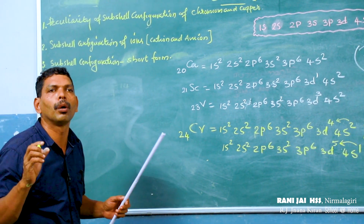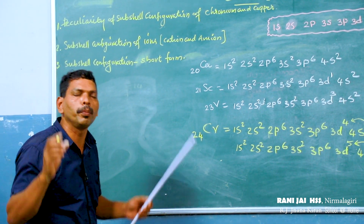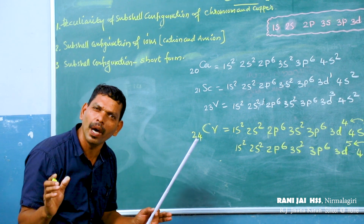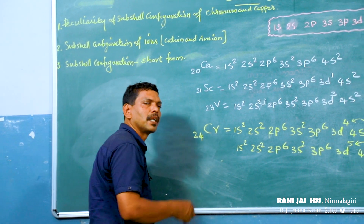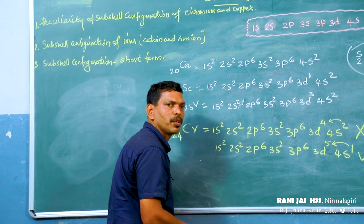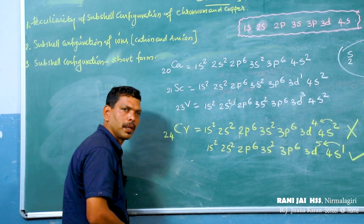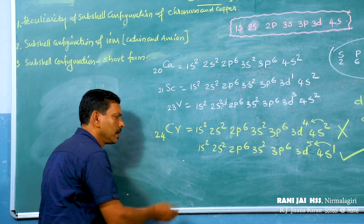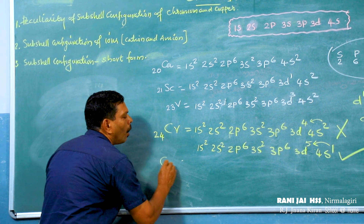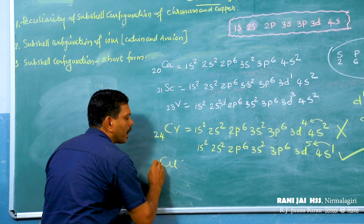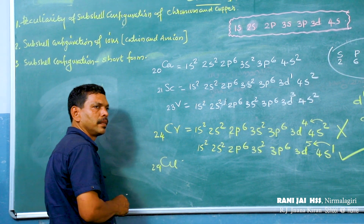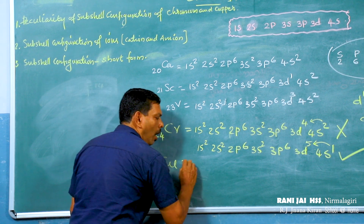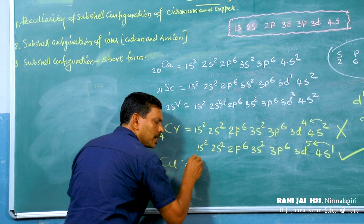Now what about copper? The atomic number of copper is 29. Try to write the electronic configuration of copper. Copper, atomic number 29 — let us write the common electronic configuration.